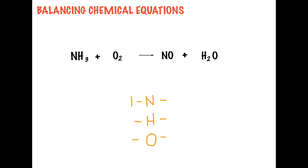We have one nitrogen on the reactant and one on the product. We have three hydrogen on the reactant and two on the product. We have two oxygen on the reactant. If oxygen is split into two formulas, you add them: one in NO plus one in H2O makes two. Now with these numbers, hydrogen is not balanced. Therefore, we have to find the least common multiple for three and two, which is six.